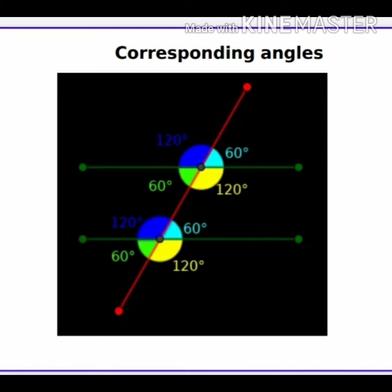Similarly, you can see the blue colored angles which are on the left of the slanted lines and above the parallel lines. Their measurements are 120 degrees each and they are equal. Similarly, you can see the green colored angles which are below the parallel lines and on the left of the slanted line. They are 60 degrees each and they are equal.